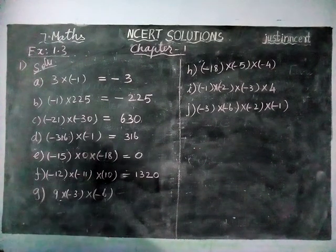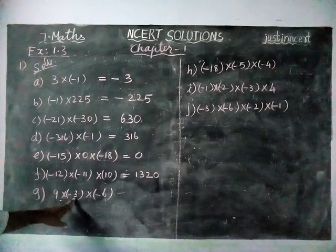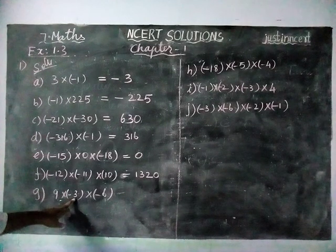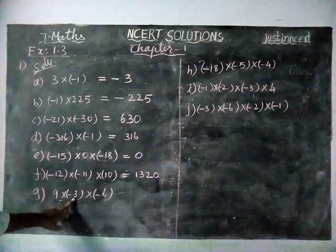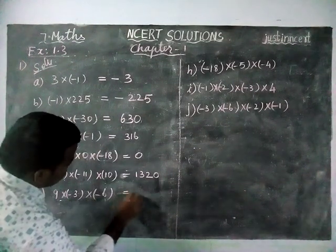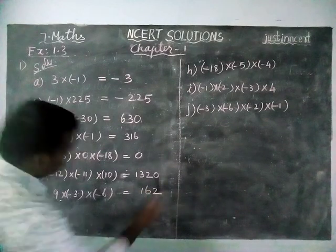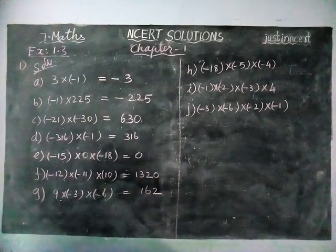And next, option g: 9 threes are 18. And this is plus sign, this is minus sign. So minus 18 into 6 is equal to 162. Minus into minus is equal to plus, so we are getting plus 162.